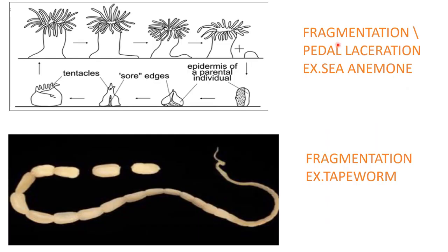Fragmentation is another mode of asexual reproduction, seen here in sea anemone. From the bottom — the pedal part — lobes are formed and a fragment constricts out from the parent body. This process is also called pedal laceration. The fragment grows into a new individual, developing tentacles and forming a new sea anemone.